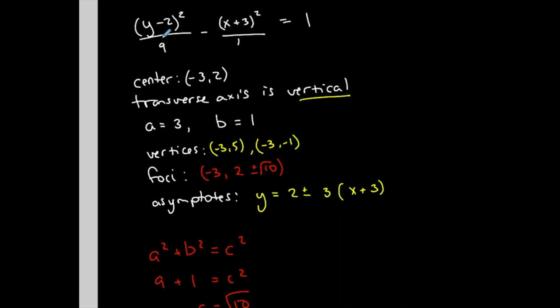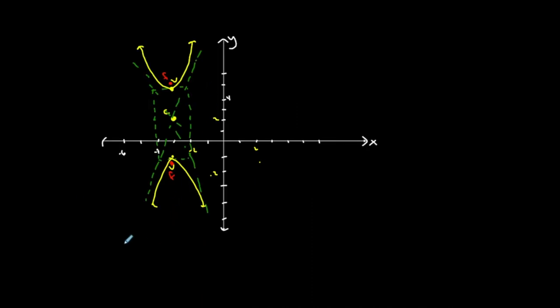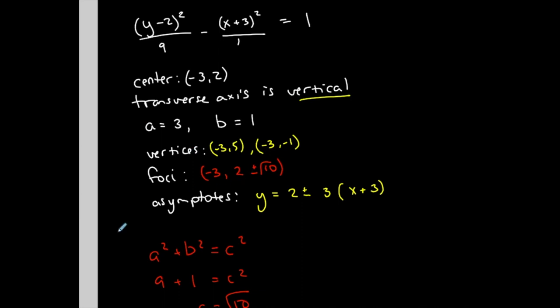So the center is negative 3, 2. Transverse axis is vertical because I'm starting with the y stuff. And then I would go and use my a and b to graph my case. And then from there you can identify vertices, foci, asymptotes, whatever you might be asked to find.